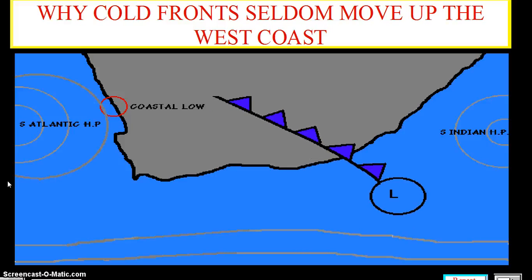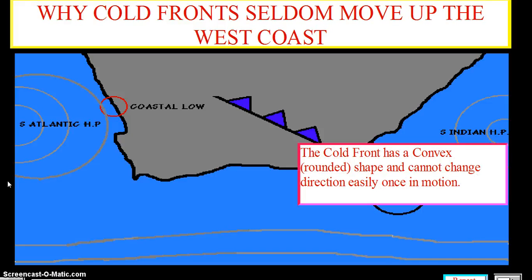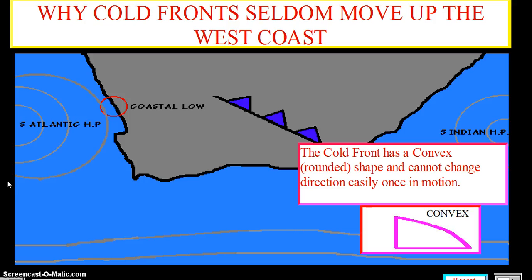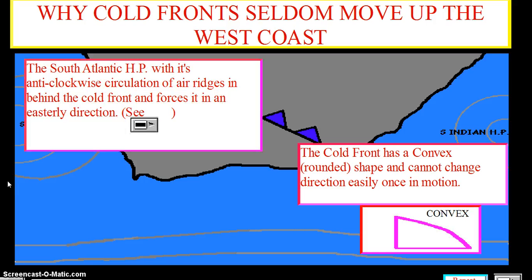Cold fronts seldom move up the west coast because they have a convex shape and cannot change direction easily. Once in motion, the South Atlantic high-pressure cell with its anti-clockwise circulation of air ridges in behind the cold front.